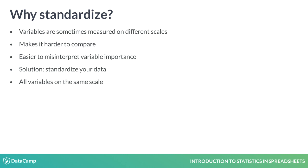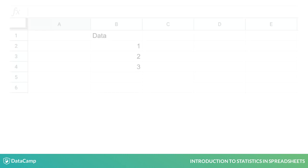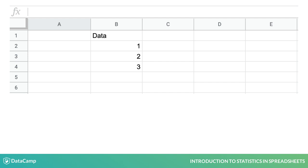Z-scores are an extension of what you've already seen in this chapter. To calculate the z-score of a data point, subtract the mean and divide by the standard deviation, as shown in this simple example here in which we have three data points.